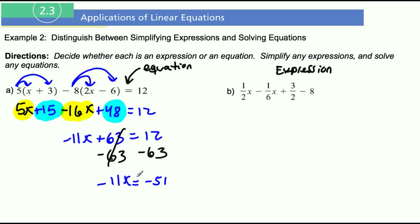And then we're going to divide both sides by negative 11. So that means we get x equals 51 over 11.